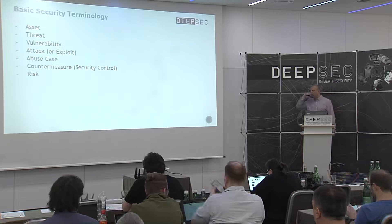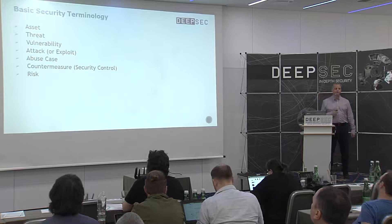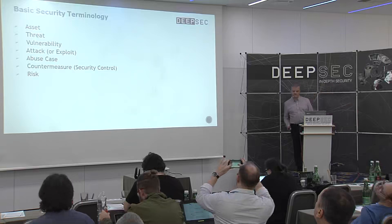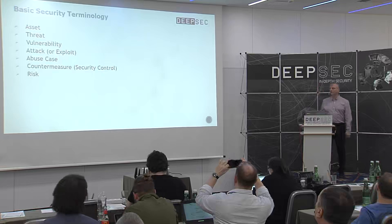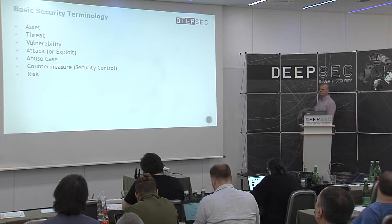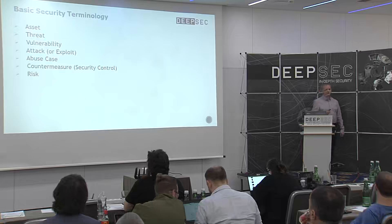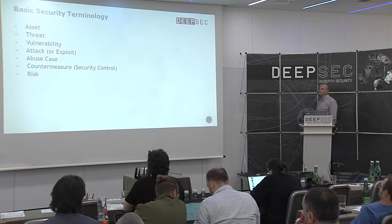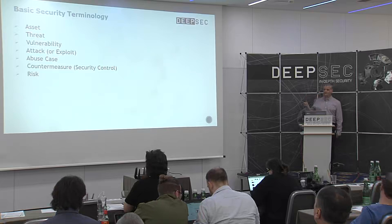Before we dive deeper into the processes, I just want to provide you the basic security terminology I'm using in my presentation so we'll all be on the same page. An asset is something that provides value to our business. In our case, it might be the software code itself, our application, all the data we have — like user-related data, credit card information, etc. It's also related to the components we have, like web servers, application servers, databases, and so on.